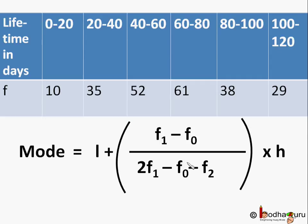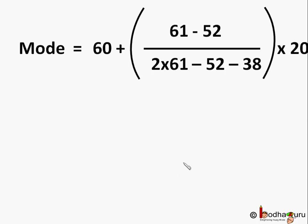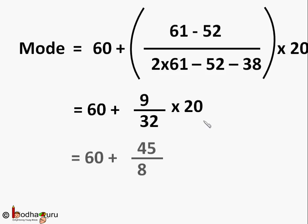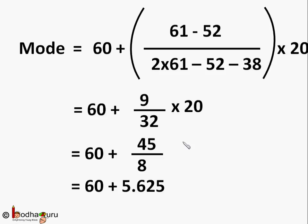We put these values in the formula. Mode = 60 + [(61 - 52) / (2 × 61 - 52 - 38)] × 20. Solving inside the bracket, we get 9/32. So it is 60 + (9/32) × 20, which equals 60 + 45/8, which equals 60 + 5.625, which equals 65.625.